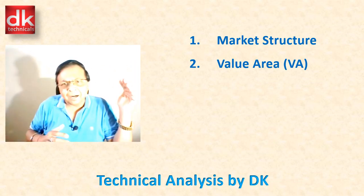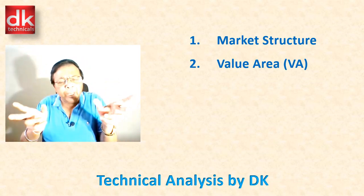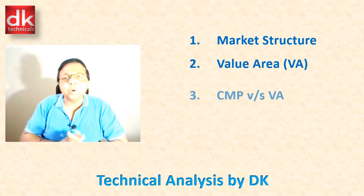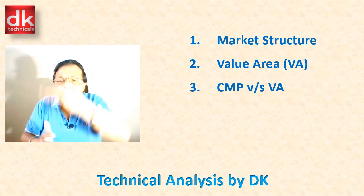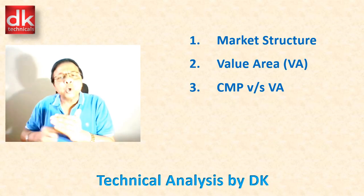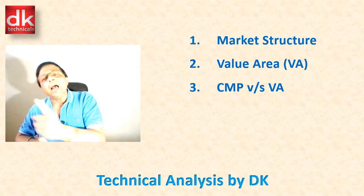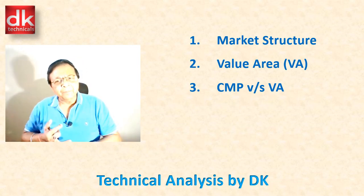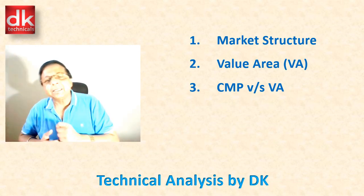Pehla hai market structure, aur uske baad jab hum support and resistance aur supply and demand area ko correlate karte hai, to hame wo pata rehta hai — wo value area jahan trade ko initiate karne se maximum risk reward ratio aapke favor mein kaam karayga. Number three, important hai — kya current market price jo chal rahi hai, wo value area ke respect mein kis jagah pe position hai chart ke upar. Yeh hume ek guideline deta hai ki hum alert set kar sakte hai aur samajh sakte hai ki kis samay pe hume trade initiate karne ki opportunity aane ki sambhavna hai — taaki hum galat price pe entry na karein, because right entry timing in the market is very very important.